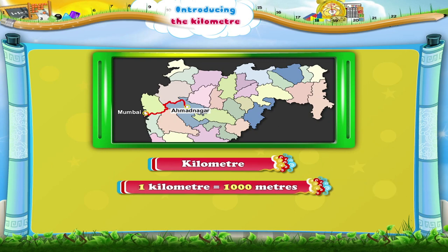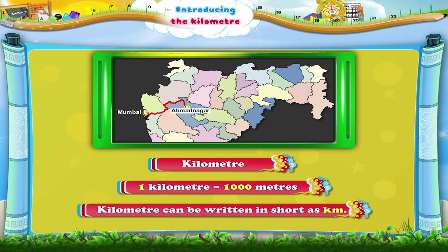One kilometre equals one thousand metres. Kilometre can be written in short as KM.